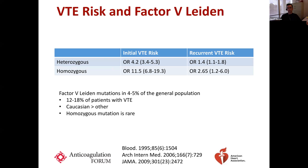Homozygous Factor V Leiden is far more rare and does raise the risk of both initial and recurrent VTE more significantly. About 5% of the general population has Factor V Leiden — roughly 1 in 20 people — and among patients who have had a blood clot, about 15% will have a Factor V Leiden mutation. It's more common in Caucasian patients, and the homozygous mutation is quite rare. For me, the most common result — heterozygous Factor V Leiden — tends not to impact my clinical decision-making a whole lot, so I don't routinely order it for most patients.